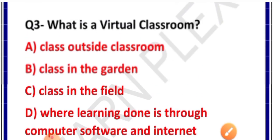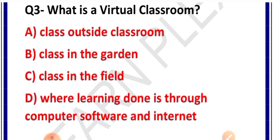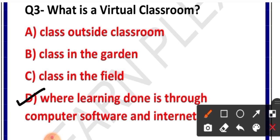Question number 3: What is a virtual classroom? Options: A. Class outside classroom, B. Class in the garden, C. Class in the field, D. Where learning is done through computer software and internet. Correct answer is option D. Virtual classroom woh hota hai jahaan par seekhne ki prakriya computer software aur internet ke madhyam se ki jati hai.